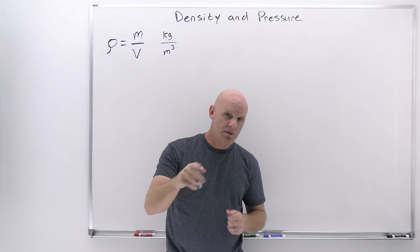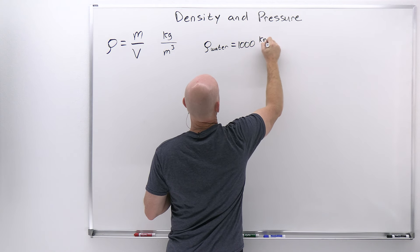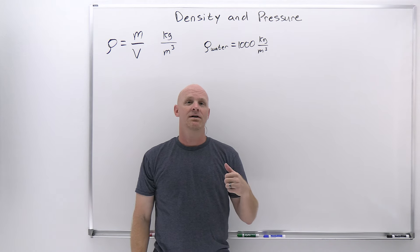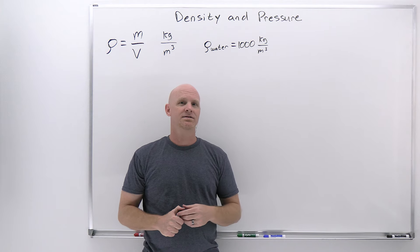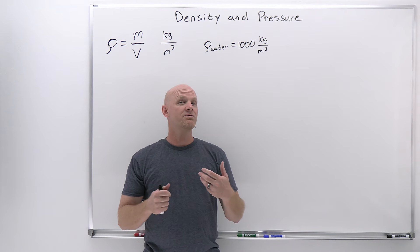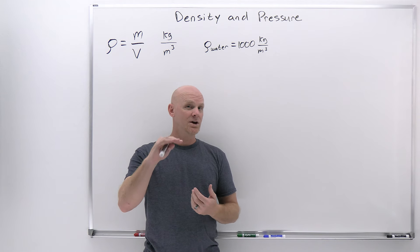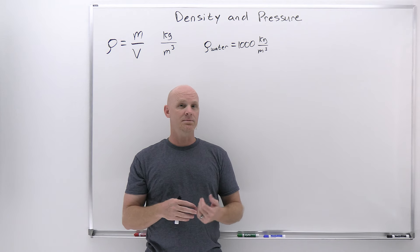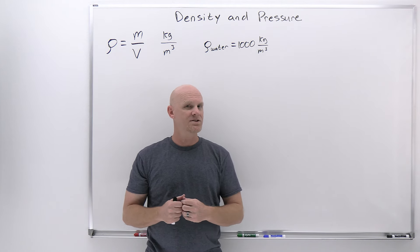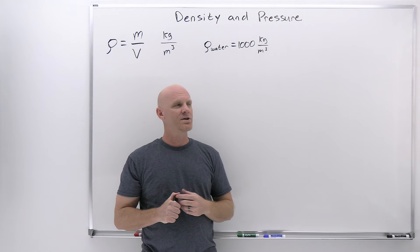You are definitely on the hook for knowing the density of water. The density of water equals 1000 kilograms per cubic meter — something you're definitely supposed to memorize. Technically this is the density of water at four degrees Celsius in the liquid phase. The phase matters: solid, liquid, and gas all have different densities. Water is unusual — when you freeze it, the solid phase is actually less dense, due to hydrogen bonding. Typically, as you go from liquid to solid, most substances get more dense. That's why ice floats, which has important ramifications for life and how the Earth works.